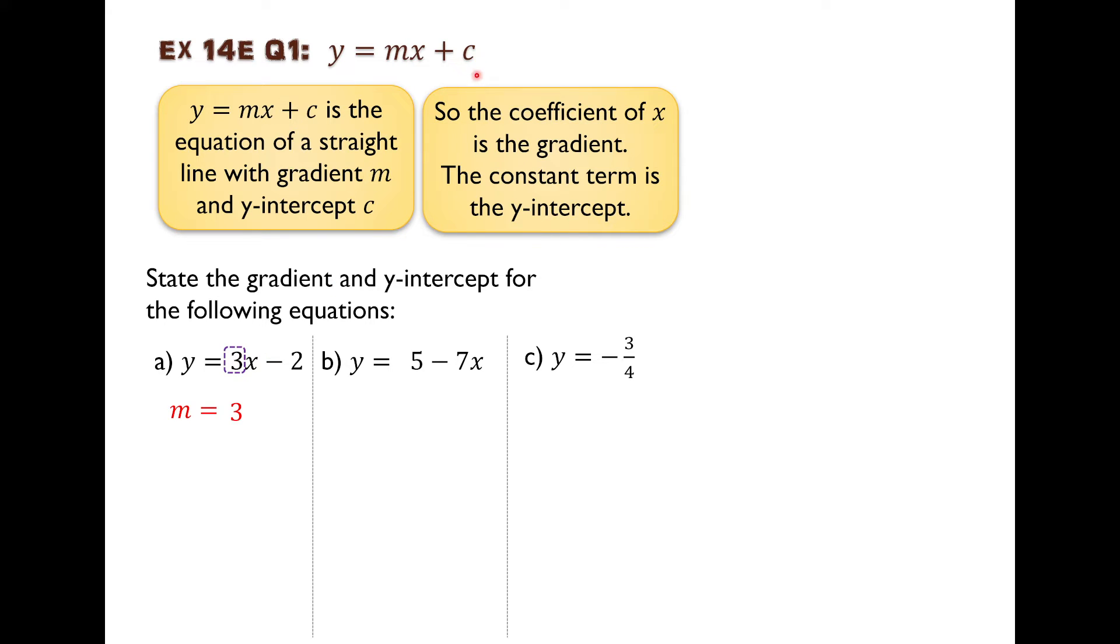And c is the constant term. It's the term that doesn't have an x in it. It's negative 2. The term includes the plus or minus sign, so this isn't just 2, it's negative 2. The constant term includes that minus sign. So the gradient is 3 and the y-intercept is negative 2.